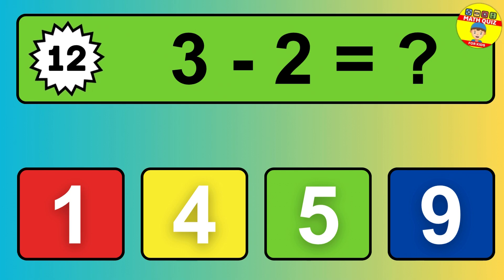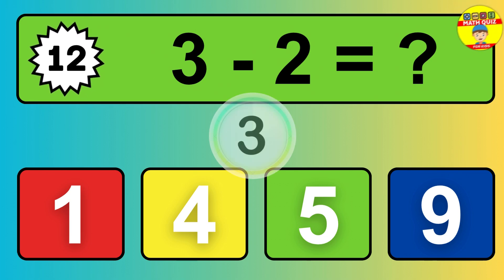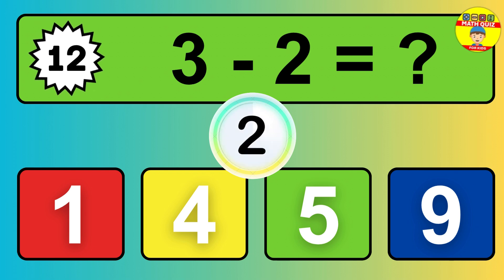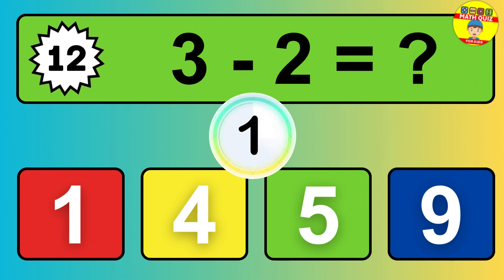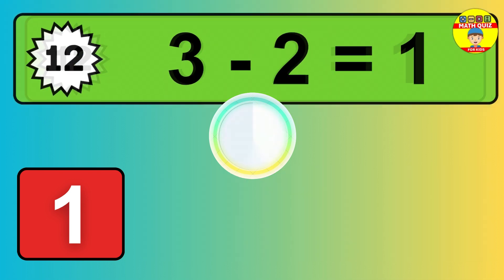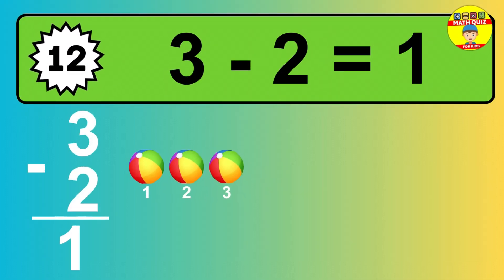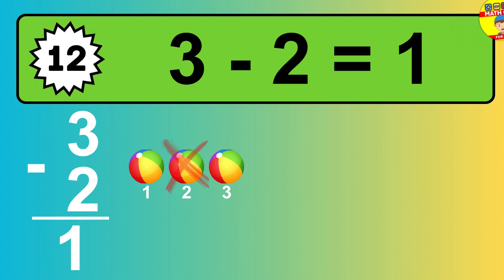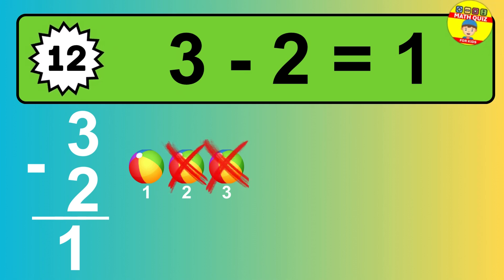Question 12: 3 minus 2 equals what? The answer is, 3 minus 2 is 1. Let's count it: 1.